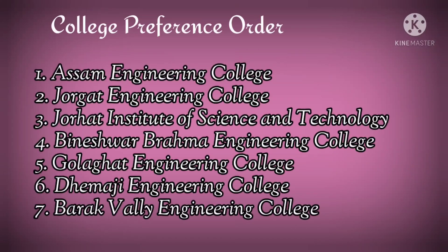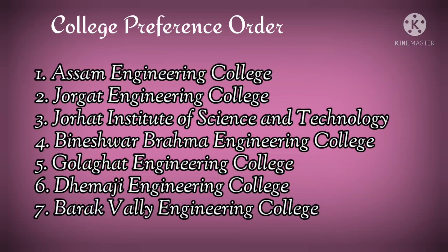While setting preferences for colleges, you should follow the order as mentioned below. Set your first preferred college as Assam Engineering College (AEC), second preference as Jorhat Engineering College (JEC), third as Jorhat Institute of Science and Technology, and fourth as BBEC. People often set Golaghat Engineering College prior to BBEC, but BBEC is comparatively older than Golaghat Engineering College. Still, due to geographic position you can select GEC. After these two colleges, select Demaji Engineering College, and at the very end select Barrack Valley Engineering College (BVEC).